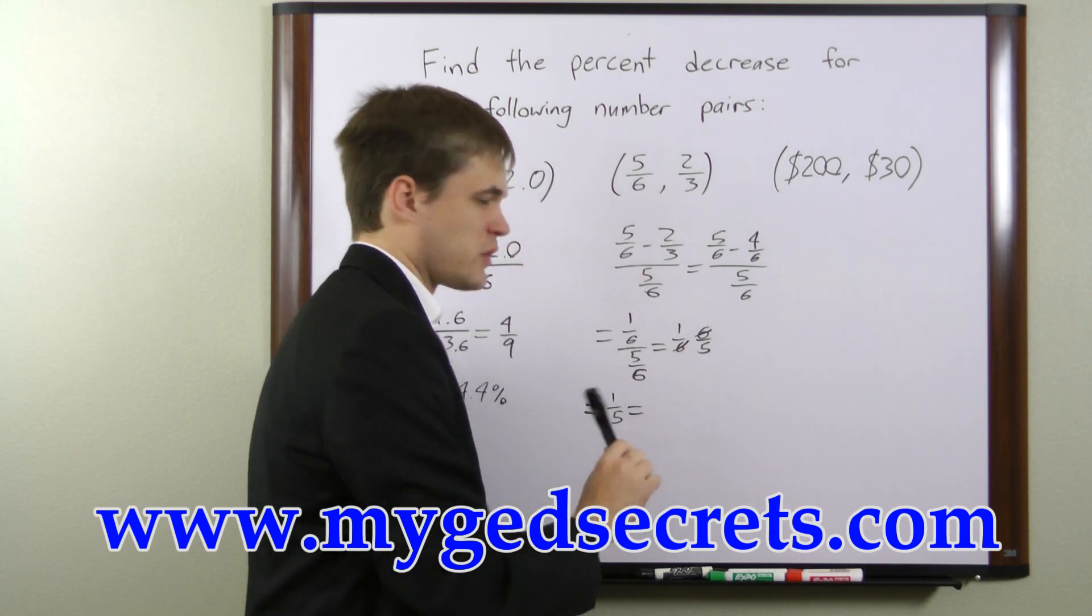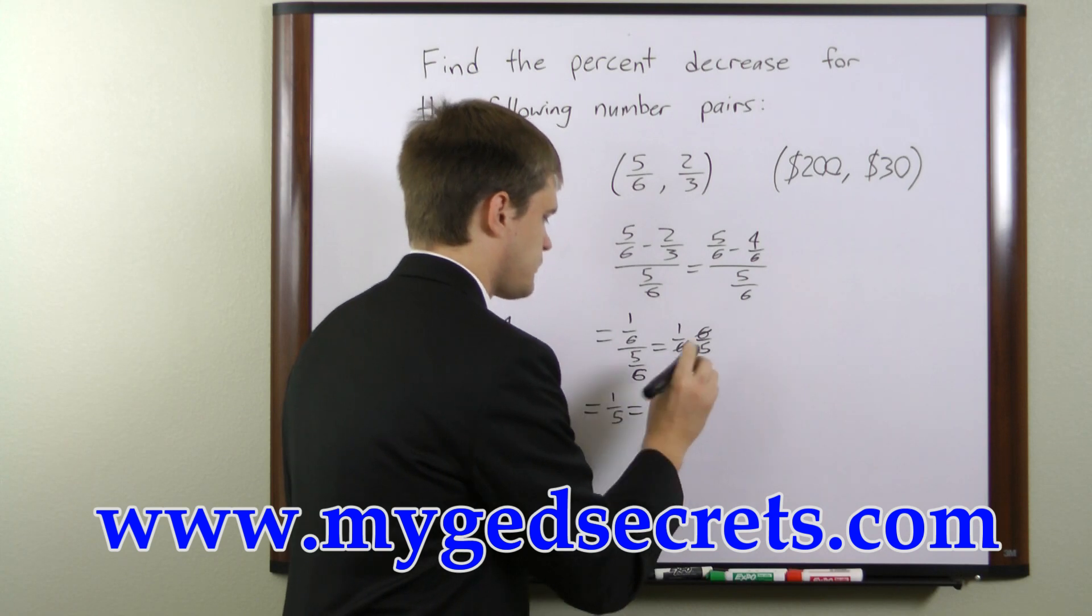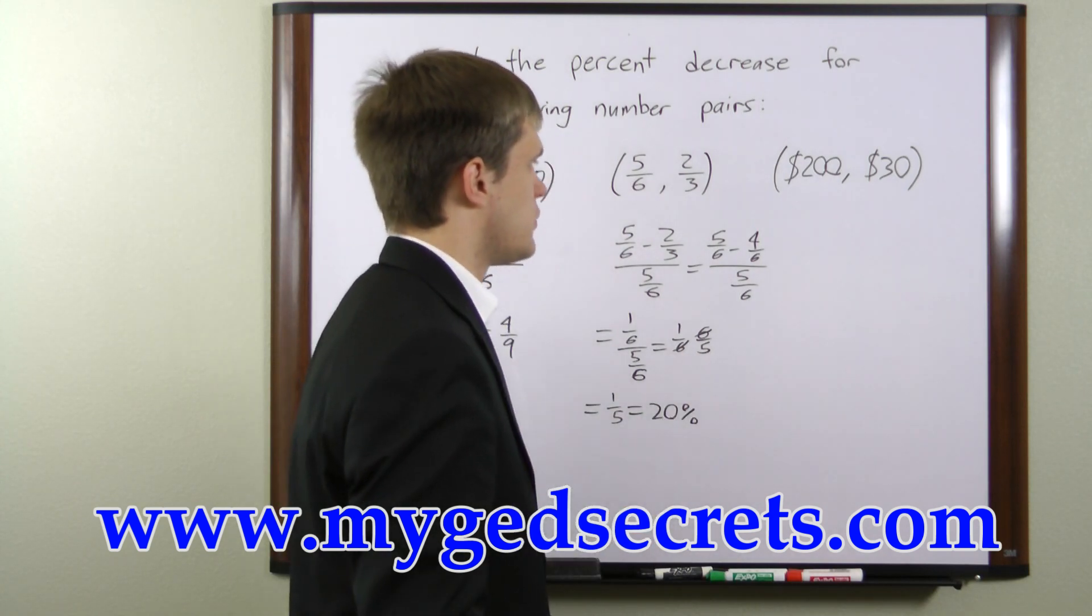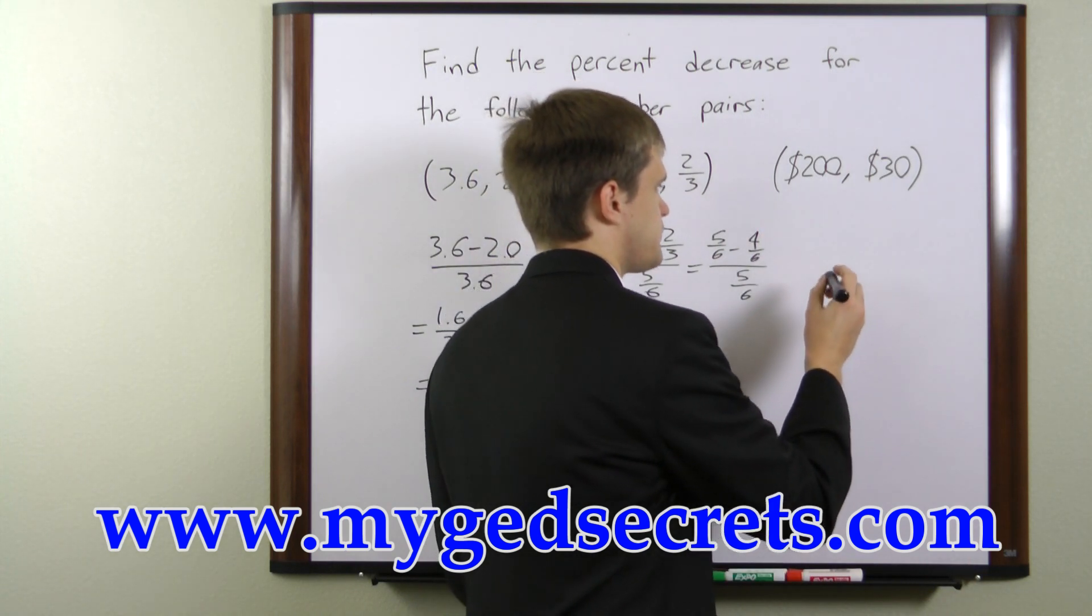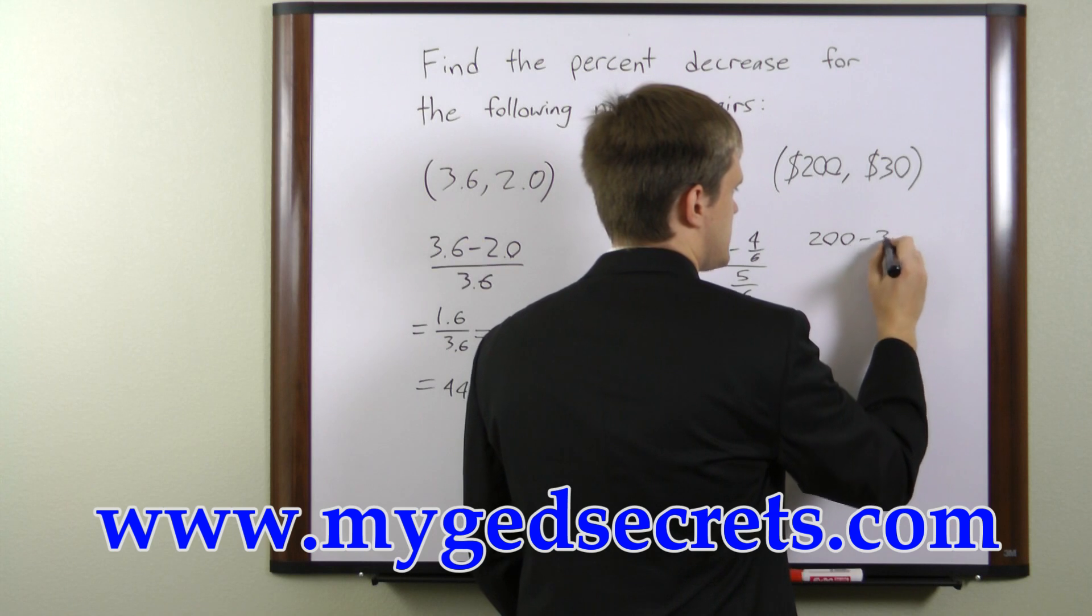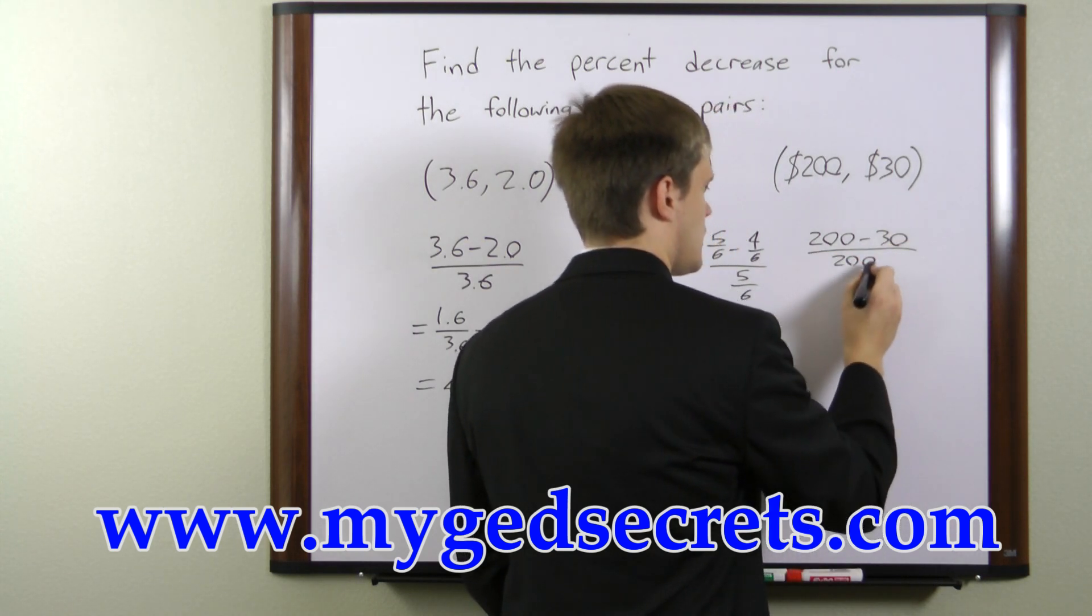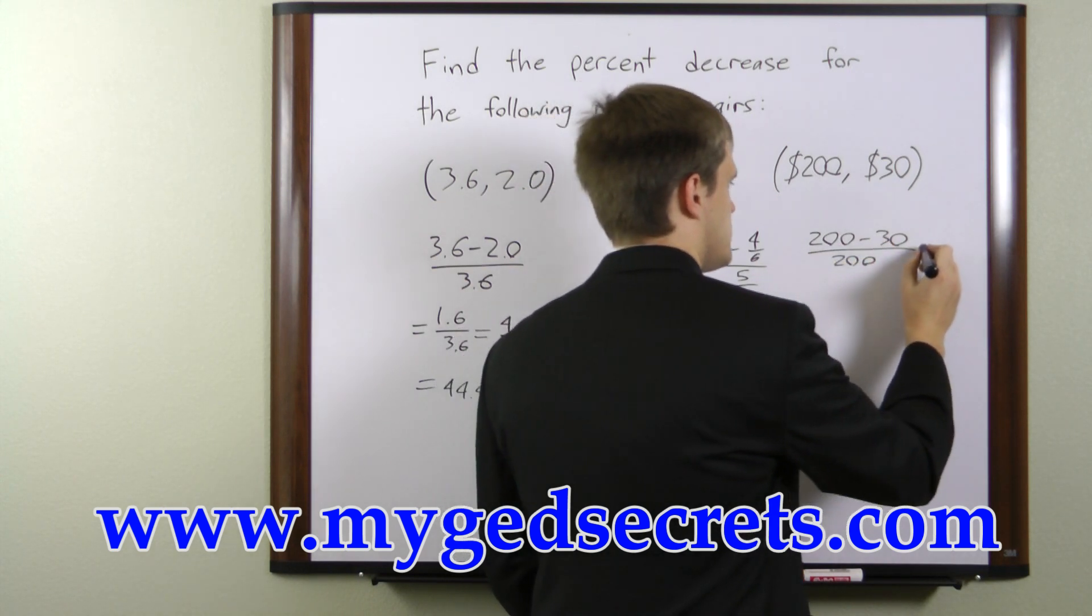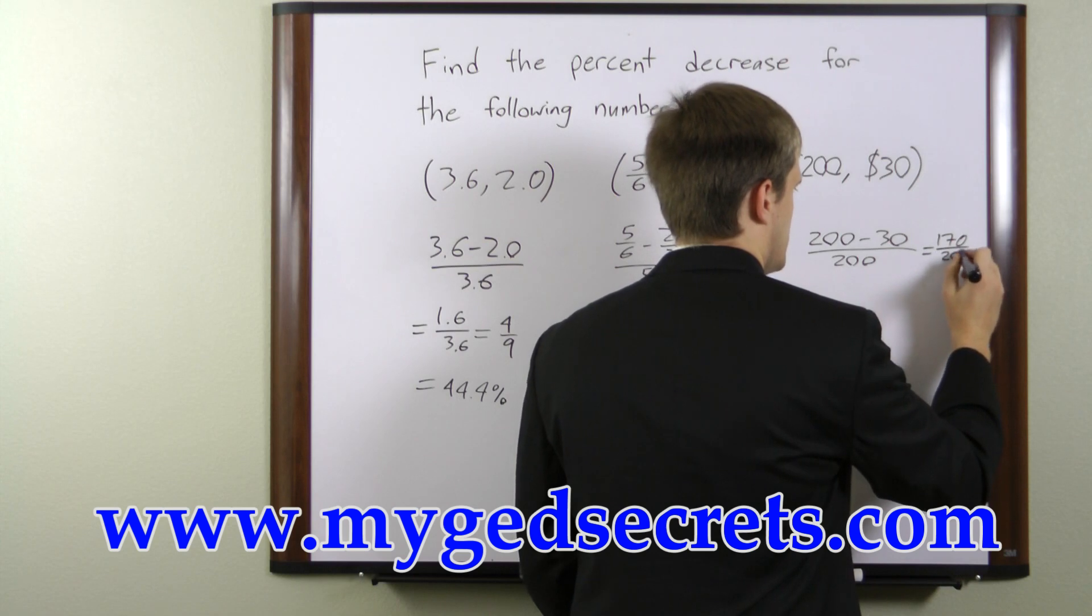In this final example we have $200 and $30. So we'll take once again the first number minus the second number divided by the first number. Now $200 minus $30 is $170. So what we have is $170 over $200.